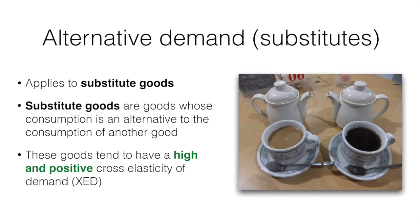Alternative demand in this syllabus describes substitutes, which are goods that are generally alternatives for one another. In this image, we see alternatives of tea and coffee. The same could hold true for butter and margarine. They tend to have a positive cross elasticity of demand, and to understand why, you should consider the impact an increase in the price of tea will have on the demand for coffee.